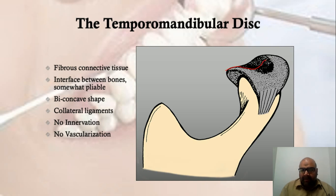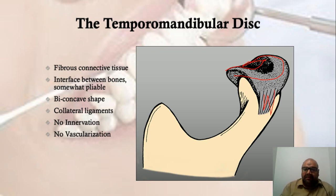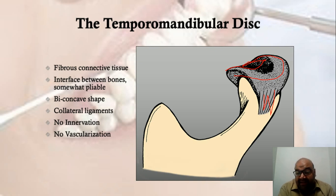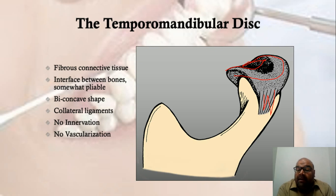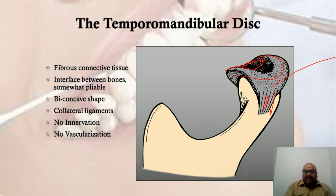The articular disc has a biconcave shape and is attached to the neck of the condyle by collateral ligaments. Like the articular disc, the collateral ligaments have no innervation and no vascularization. The collateral ligaments along with the temporomandibular ligament are known as the primary or principal ligaments of the TMJ, while the sphenomandibular, stylomandibular, and other supplementary ligaments are the accessory ligaments.